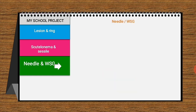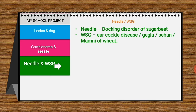Regarding needle nematode, it causes docking disorder of sugar beet, characterized by irregular stunted plants and frequently fangy roots. In normal sugar beet the taproots are generally smooth and small, but in affected sugar beet (docking disorder) the root grooves are much deeper than normal. This mostly occurs on light or structureless sandy soils.